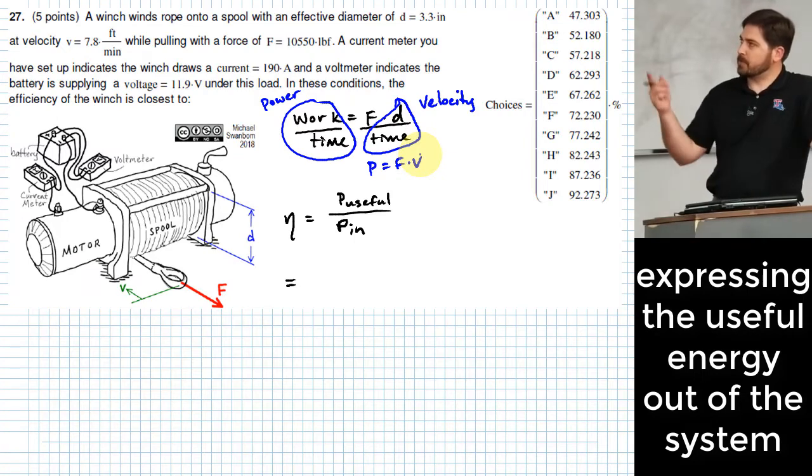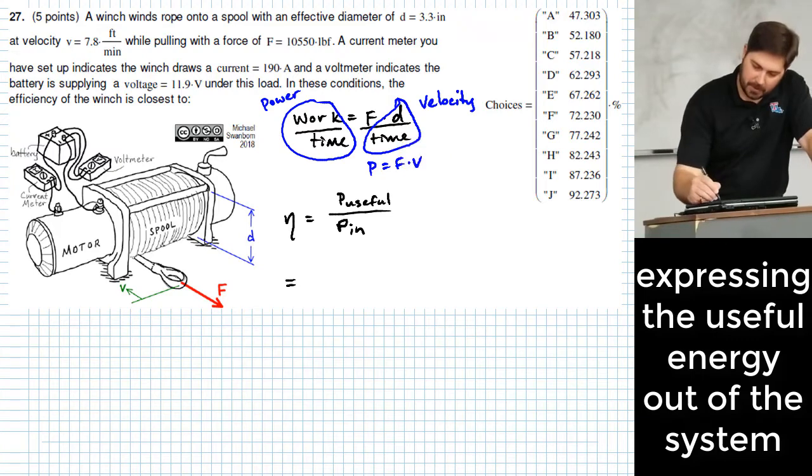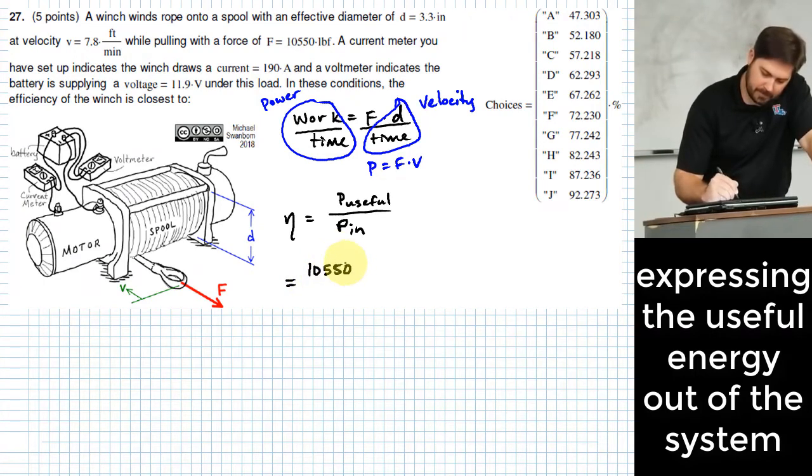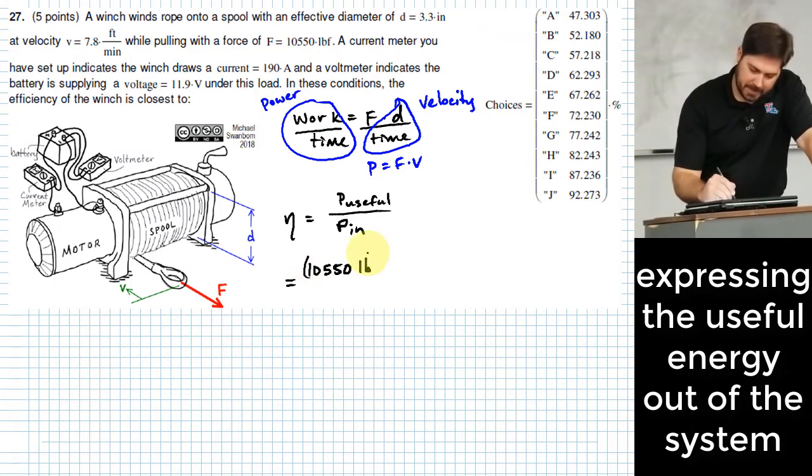Well that's helpful because for this problem, we already know the force and the velocity. So we can just put those in there. Force is 10,550 pounds times your velocity there is 7.8 feet per minute.